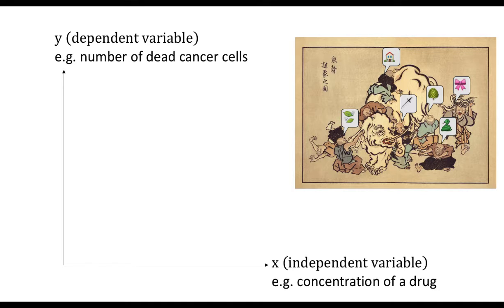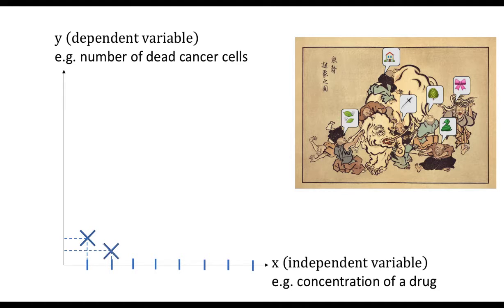We suspect that some other quantities, for example the number of dead cancer cells, might be dependent on this independent variable. So we call this the dependent variable, and put it on the y-axis. In an experiment, we usually decide what values of x we would like to test, and then do an experiment to measure the dependent variable, which is also called the response variable.